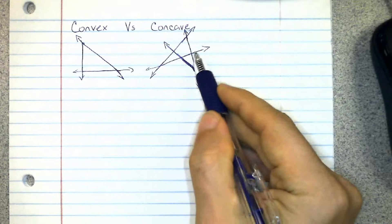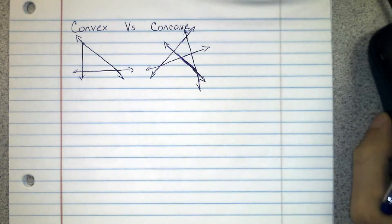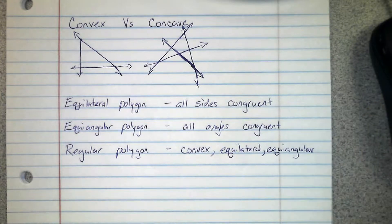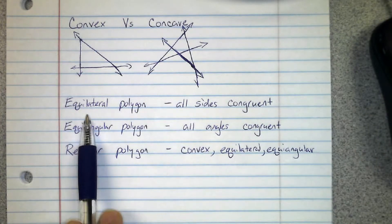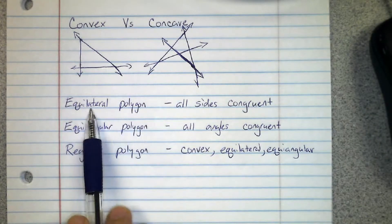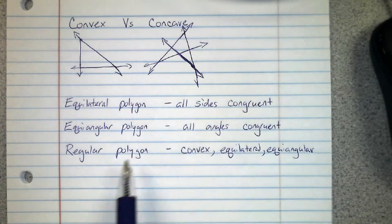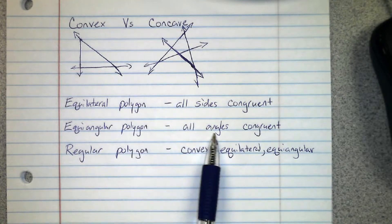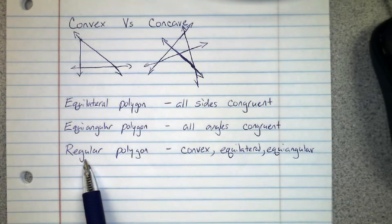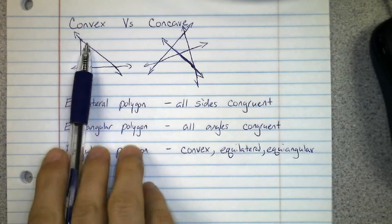Next we have a couple other classifications. Equilateral polygon - lateral means side, so all sides congruent. Equiangular polygon - all angles are congruent.